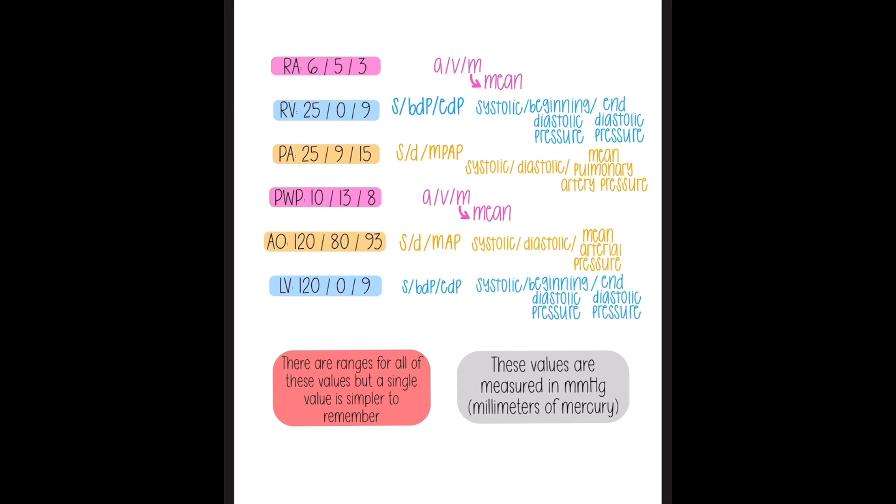So we'll start with the right atrium. You have A, V, mean. Now please note, all these numbers have ranges. All of these areas have ranges. The only reason that I write it this way is because I can memorize this, I can regurgitate it, rewrite it a million times. And when you are learning a little more in depth, yes, learn the ranges.